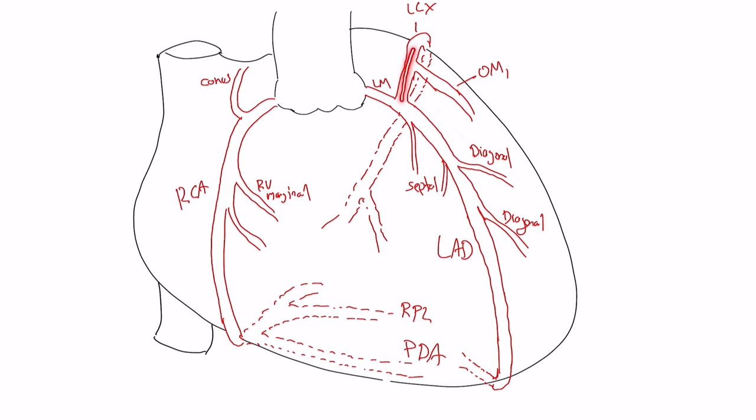The circumflex, wrapping around, going behind along the AV groove, is going to be giving off these lateral branches. Obtuse marginal one is the first branch. The second branch will be called obtuse marginal two and three, et cetera. The higher the obtuse marginal branch is more anterolateral, whereas as you wrap around and go more distal, these are more inferolateral branches. There can be sort of overlap between obtuse marginal and diagonal, depending on where they come off.